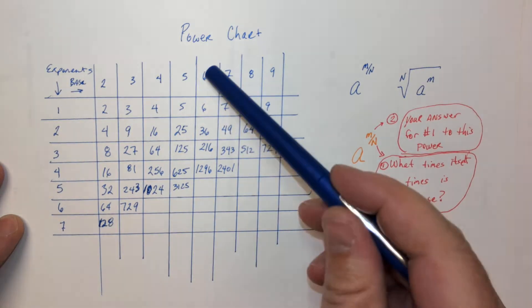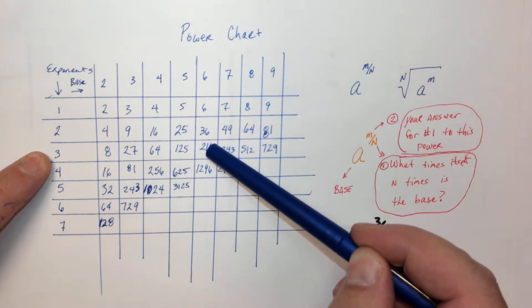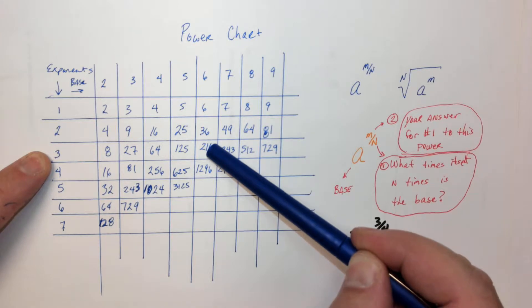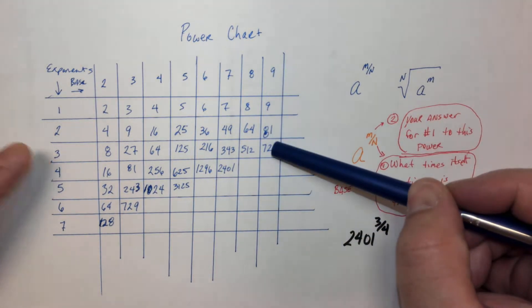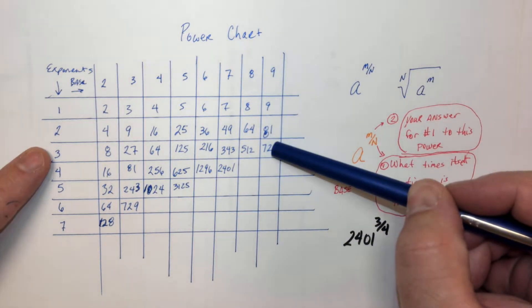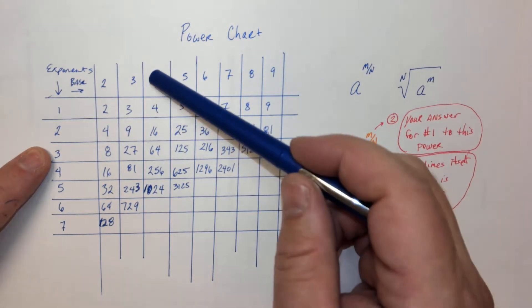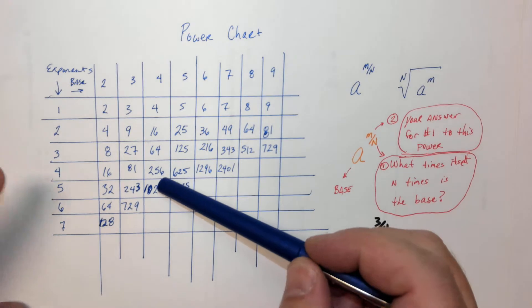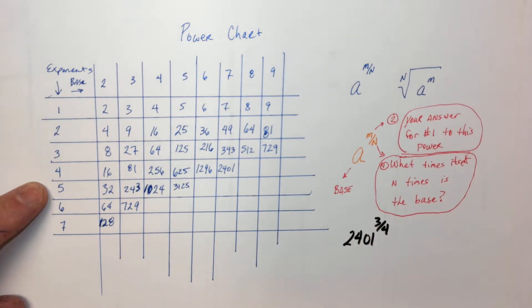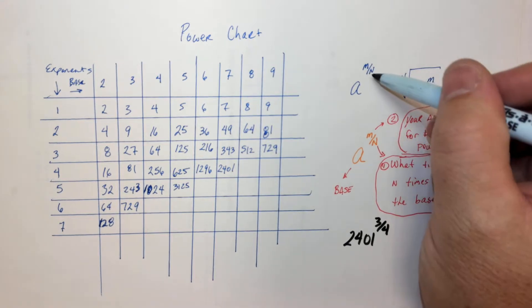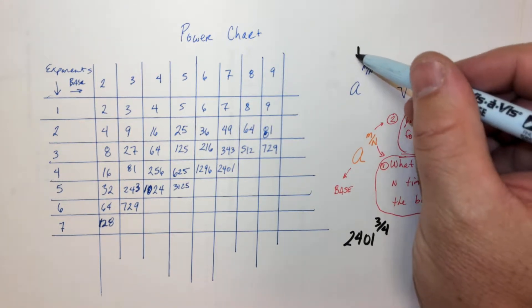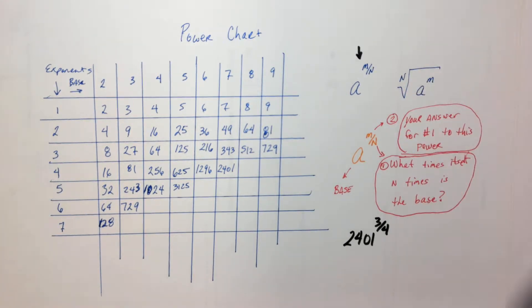So like, 6 to the 3rd power is 216, and 9 to the 3rd power is 729, or 4 to the 5th. Now why that is useful is because we're simplifying rational exponents like that.